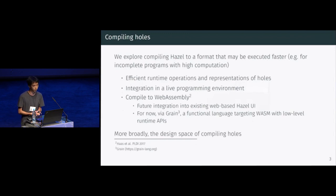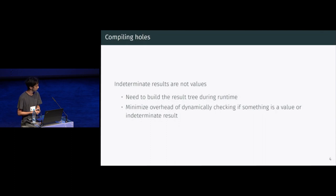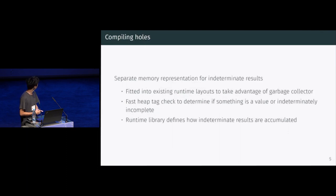More broadly, we're exploring the design space of this area. One key challenge is that indeterminate results are not values — they're a kind of tree structure — so they have very different behavior from values that a traditional compiler might expect. During runtime, we need to build these result trees, and we want to minimize the overhead of dynamically checking if something is a value or indeterminate result. We have a specific memory layout for indeterminate results that fits into the existing runtime system to take advantage of features like garbage collection. To check if something is an indeterminate result, all we need is a simple tag check. We have a runtime library that defines how we compose these indeterminate results.